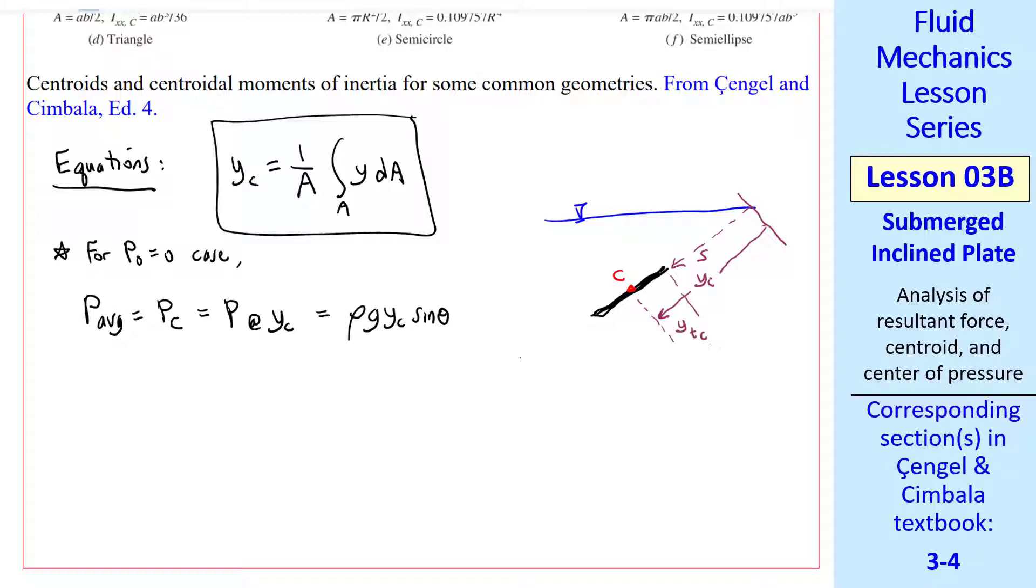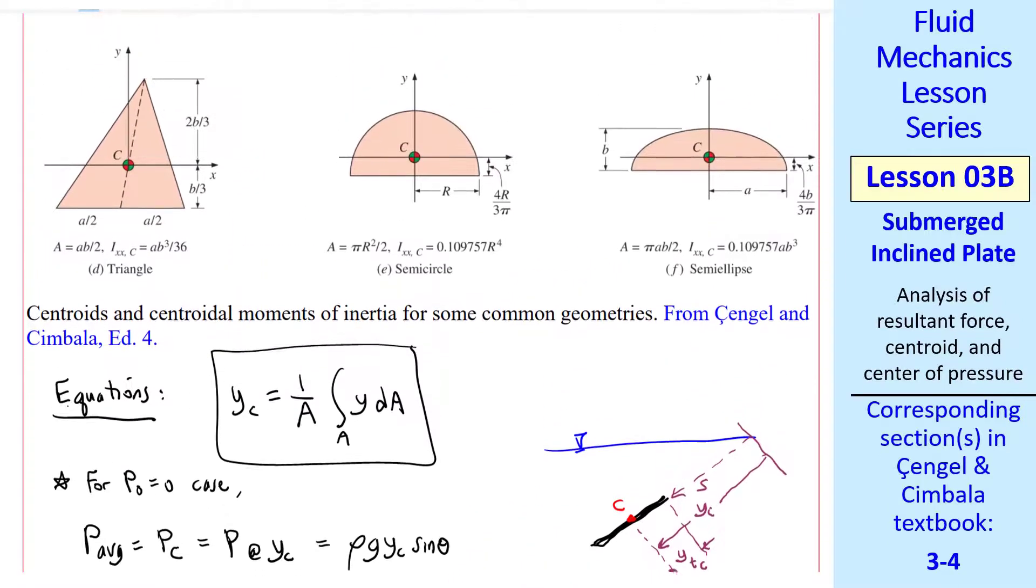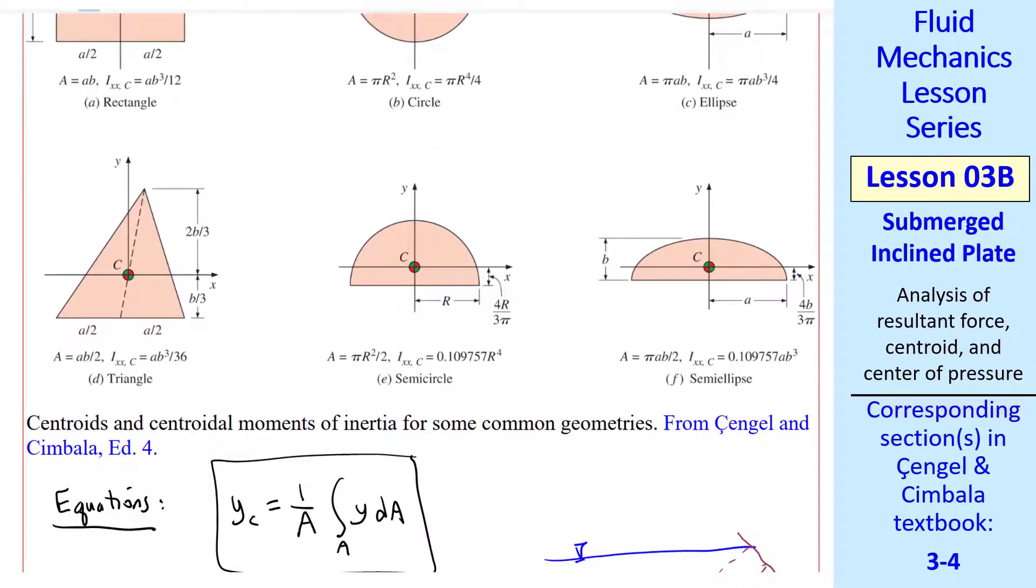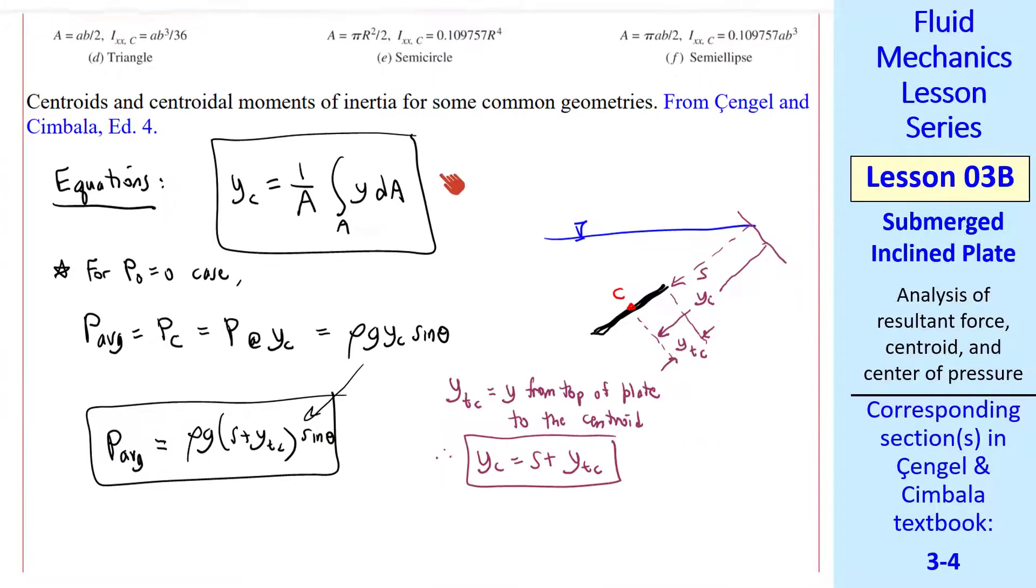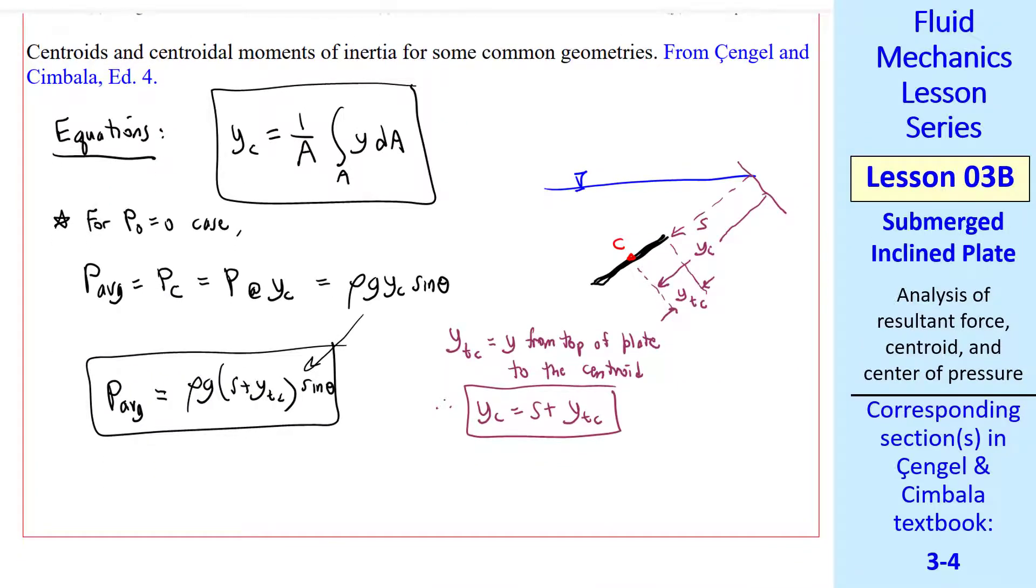I'll use the notation YTC. YTC is Y, the distance from the top of the plate to the centroid as I drew here. Therefore, YC is S plus YTC. You can see that here, S plus this little part gives you YC. We plug this into here, so P average is rho G, S plus YTC, sine theta. You have to figure out YTC from these geometries. For a semi-circle, for example, this would be YTC. And you have to do a little bit of math knowing this location.